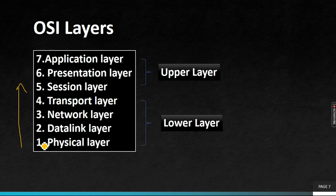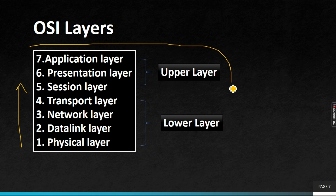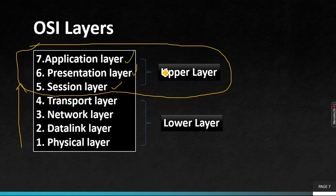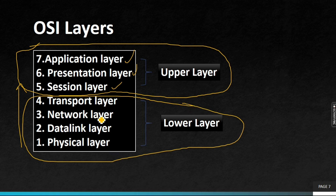We will start with the first layer and go up. The seven layers are: physical layer, data link layer, network layer, transport layer, session layer, presentation layer, and application layer. These layers are divided into two groups. The upper layers are application layer, presentation layer, and session layer.